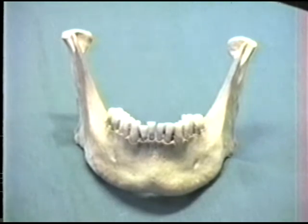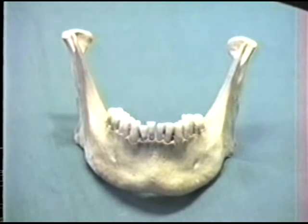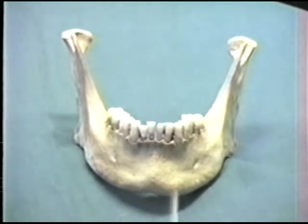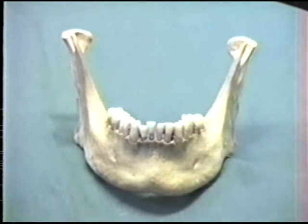La mandíbula está ubicada en el tercio inferior de la cara y es el único hueso móvil de la cabeza. Se distinguen en ella dos partes: el cuerpo en forma de herradura y dos ramas ascendentes verticales.